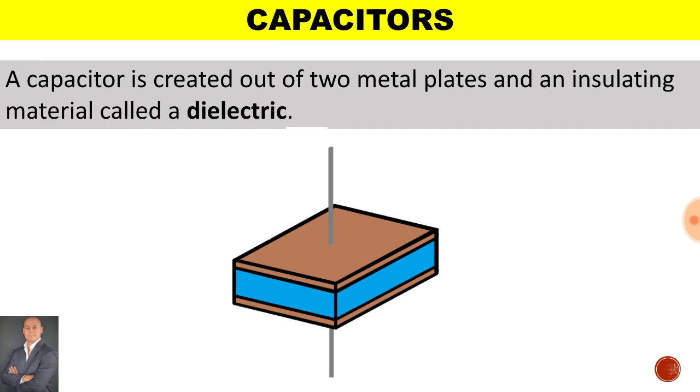A capacitor is created out of two metal plates and an insulating material called a dielectric. Here we have the dielectric material, the terminals of the capacitor and the plates that make up the capacitor.